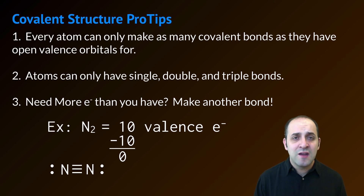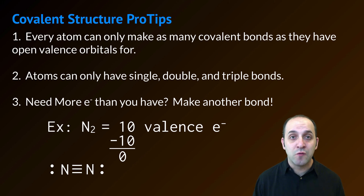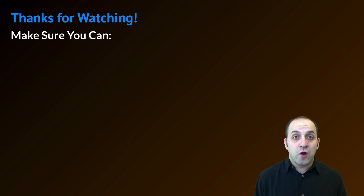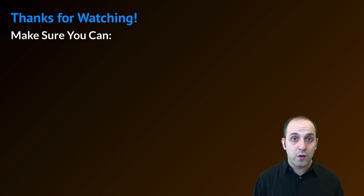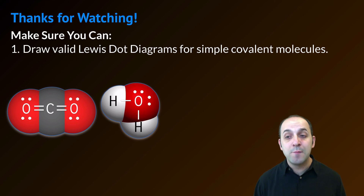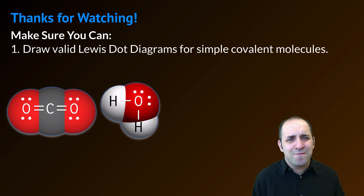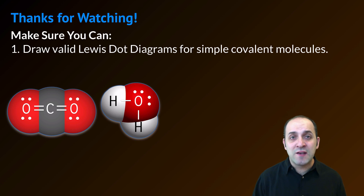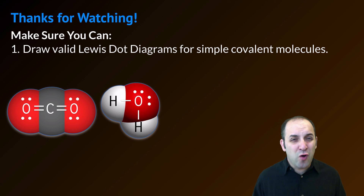Does that make sense? If it doesn't, take a moment and write down any questions you have, and then when you're ready, let's move on. Thanks so much for watching our discussion of drawing Lewis structures for covalent molecules. Make sure you can draw valid Lewis dot diagrams for simple covalent molecules — molecules made out of two, three, four, five, maybe six or seven atoms. That's really where my expectation stops for the purpose of honors chemistry, but if you can draw those, you can probably draw more complex molecules as well.